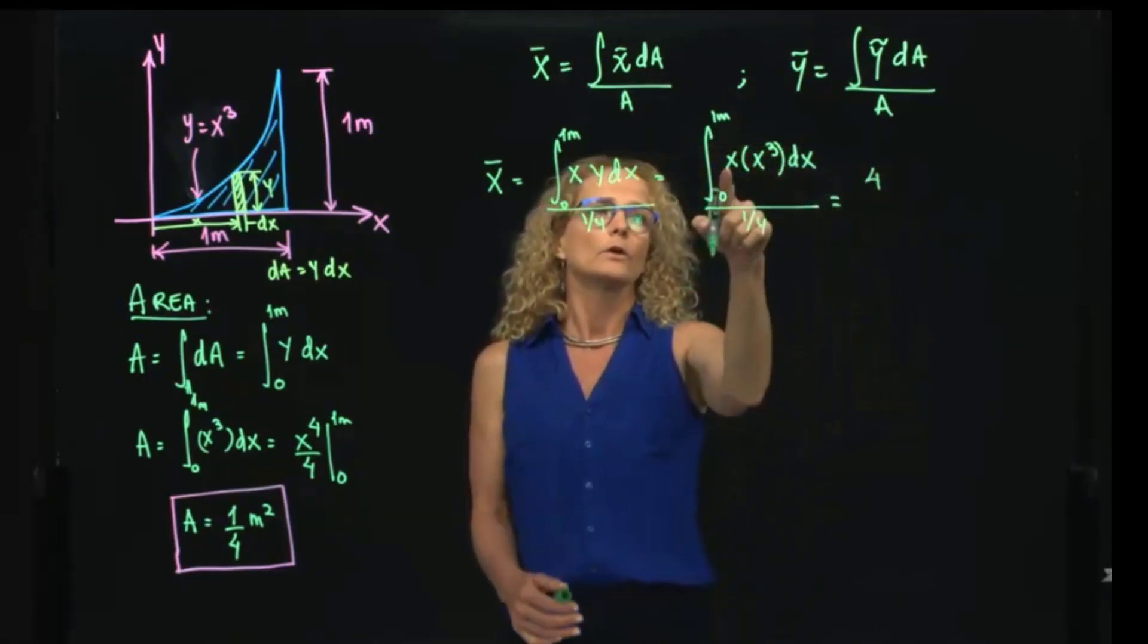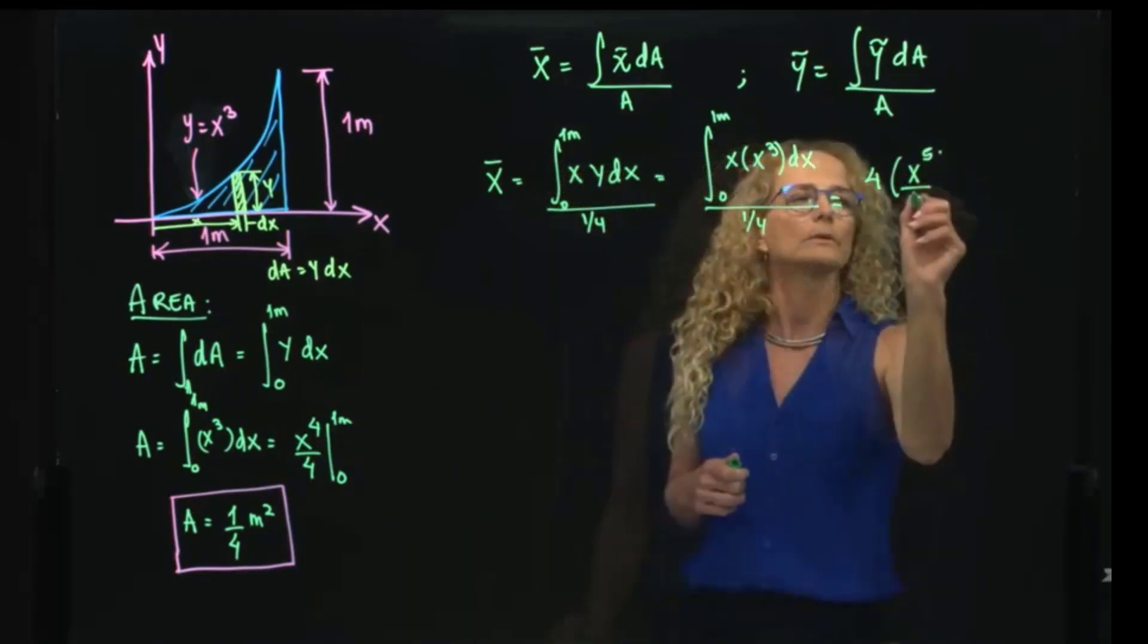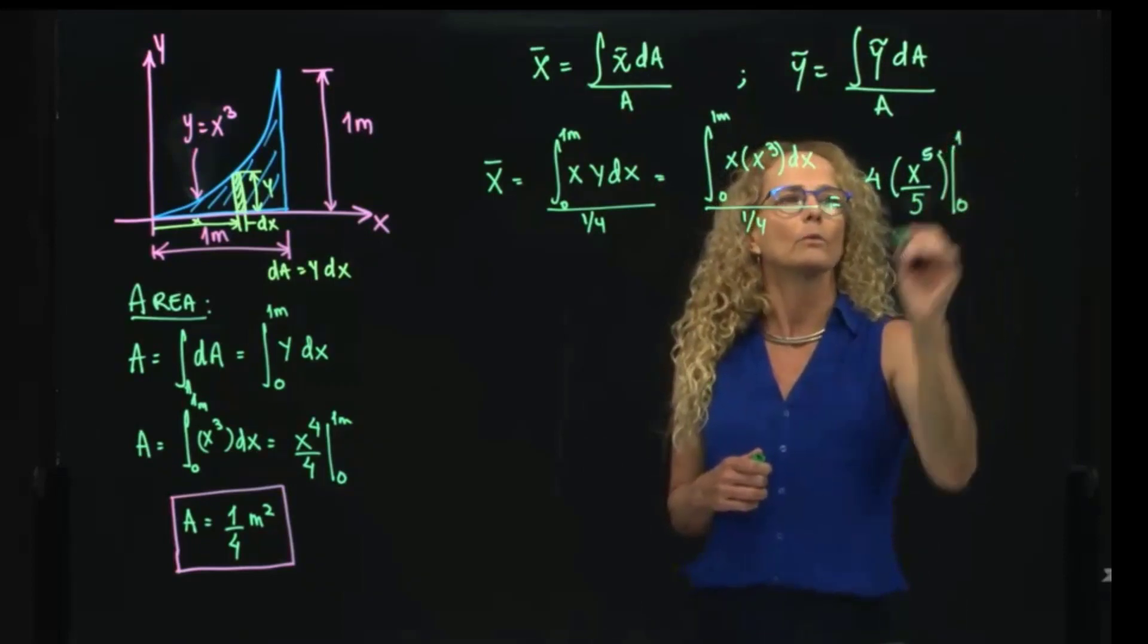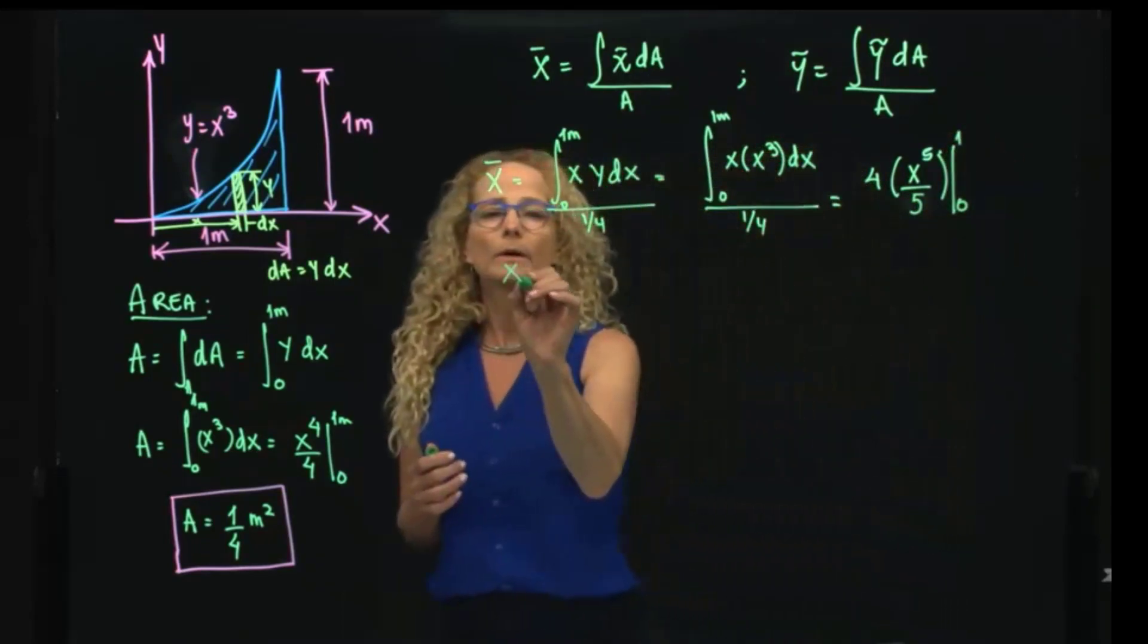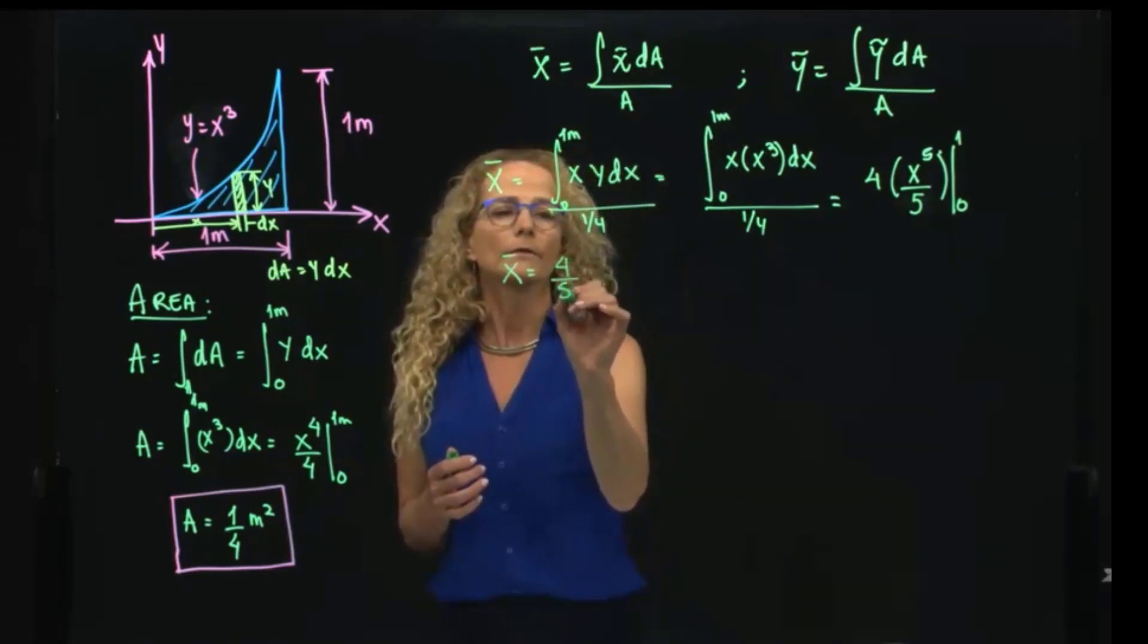So 4, and the integral of x to the 4th will equals x to the 5 divided by 5. And then the limits will be 0 to 1. Therefore, when we evaluate, we get 4 fifth meters.